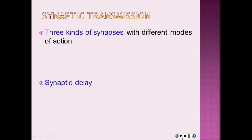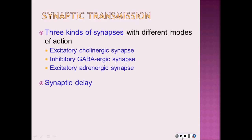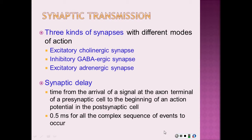Neurotransmitters have diverse actions. Three examples of different modes of action are illustrated by the excitatory cholinergic synapse, an inhibitory GABAergic synapse, and an excitatory adrenergic synapse. The synaptic delay is the time from arrival of a signal at the axon terminal of the presynaptic cell to the beginning of an action potential in the postsynaptic cell. That's approximately 0.5 milliseconds for all the complex sequences of events to occur.